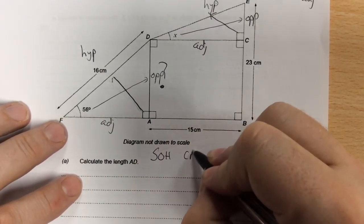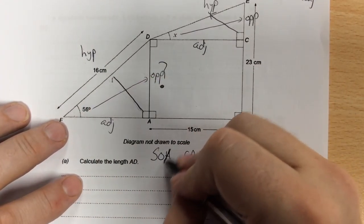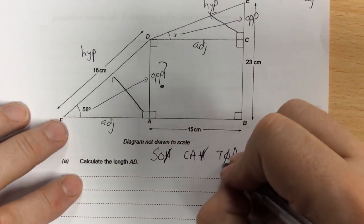Always write down SOHCAHTOA, and then you tick off the side you know. I know H, so I can tick off H, and the one you want to find. I want to find the opposite.